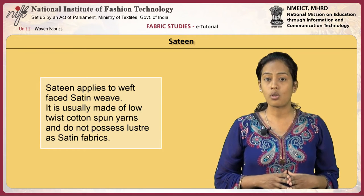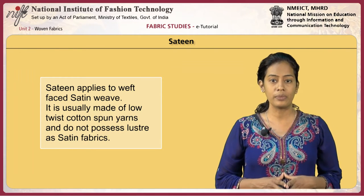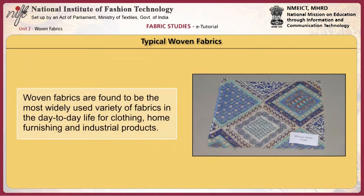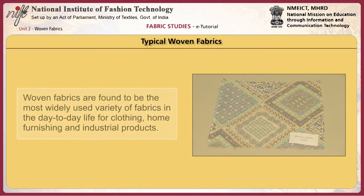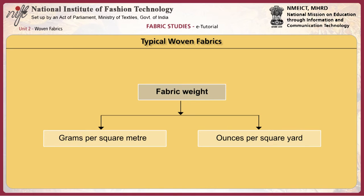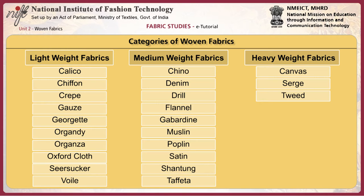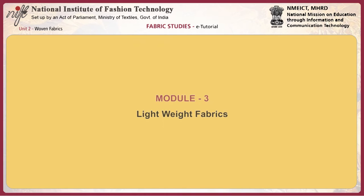Sateen applies to weft-faced satin weave. It is usually made of low twist cotton spun yarns and does not possess the lustre of satin fabrics. Woven fabrics are the most widely used variety of fabrics in day-to-day life for clothing, home furnishing and industrial products. Fabric weight is expressed in grams per square metre or ounces per square yard. Woven fabrics may be categorized as light weight, medium weight and heavy weight according to their thickness and heaviness.